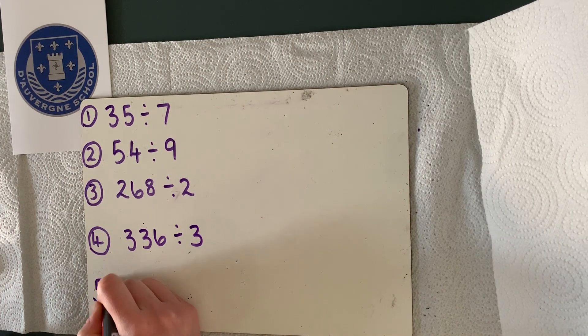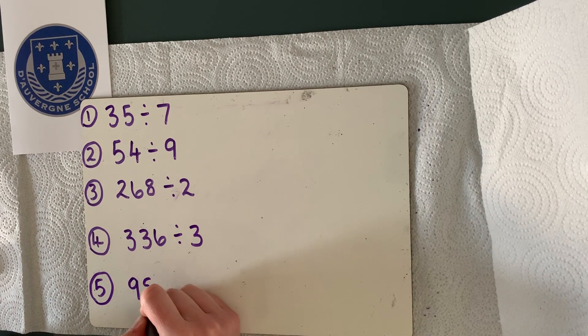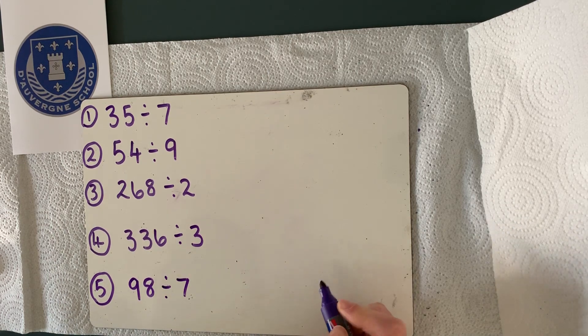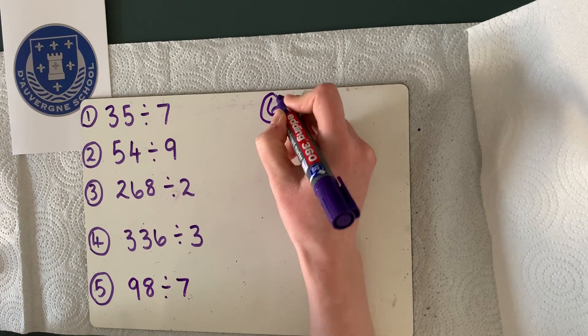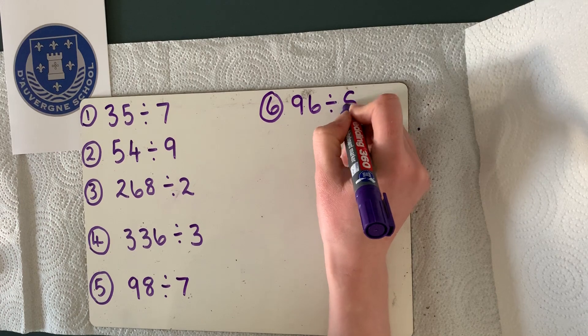Number 5: 98 divided by 7. Number 6: 96 divided by 8.